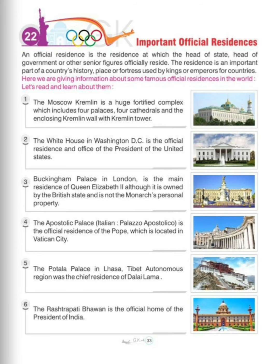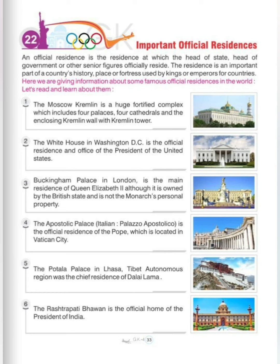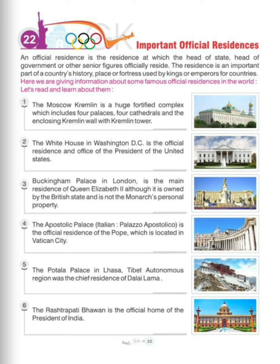Next is the Apostolic Palace. The Apostolic Palace, Italian: Palazzo Apostolico, is the official residence of the Pope, located in Vatican City. Then, the Potala Palace in Lhasa, Tibet Autonomous Region, was the chief residence of the Dalai Lama.